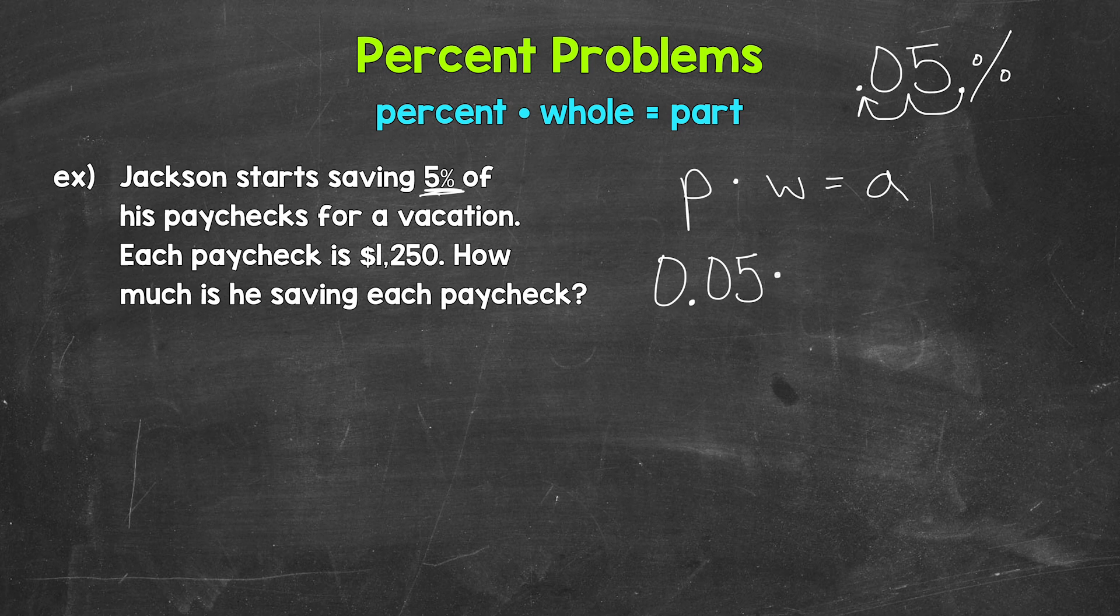Times the whole equals the part. So now we need to identify the whole and the part. Each paycheck is $1,250. So is that the whole or the part?